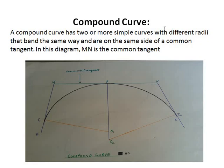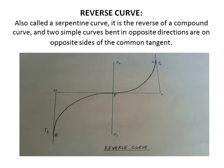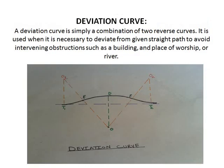The next type is the reverse curve, also called a serpentine curve. It is the reverse of a compound curve, with two simple curves bent in opposite directions and on opposite sides of the common tangent. Two roads are parallel and we use reverse curves to connect them.